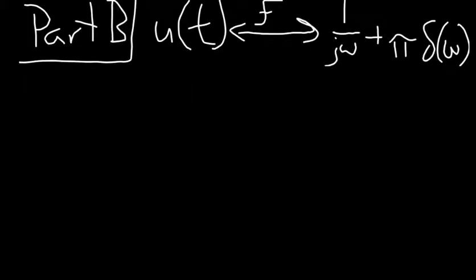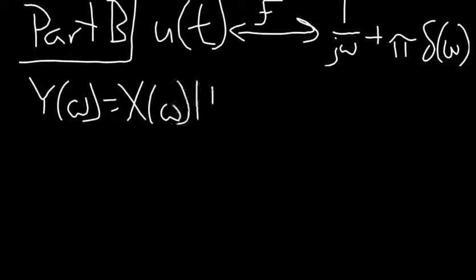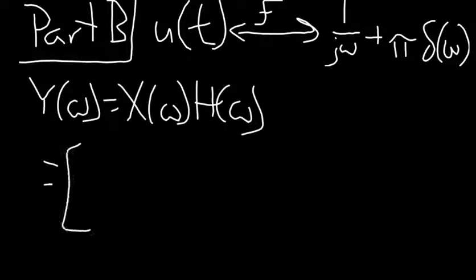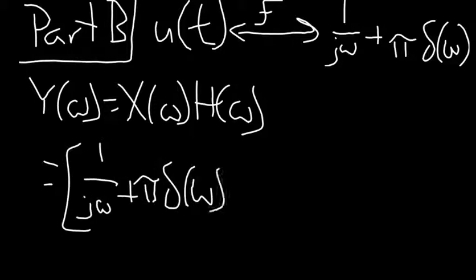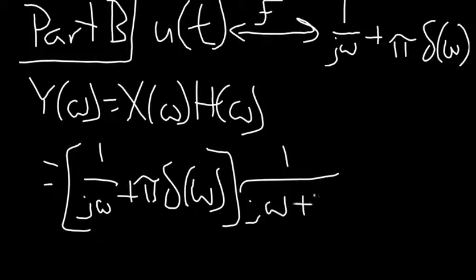For part b, using the property that u(t) Fourier transforms into 1 over j-omega plus pi times delta(ω), we can calculate Y(ω) equals X(ω) times H(ω), which equals the quantity 1 over j-omega plus pi times delta(ω), times the quantity 1 over (j-omega plus 2).